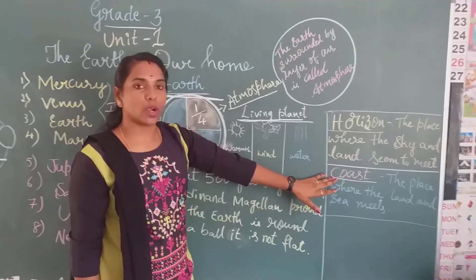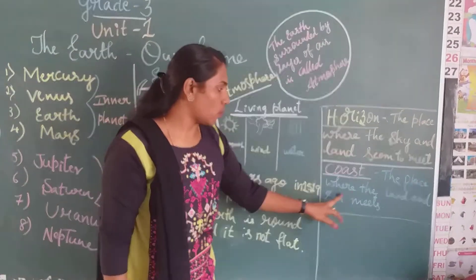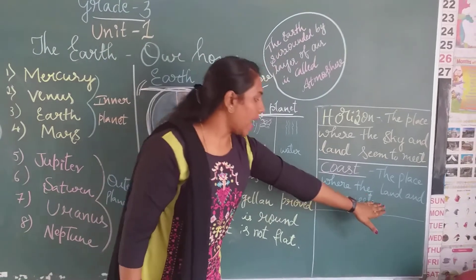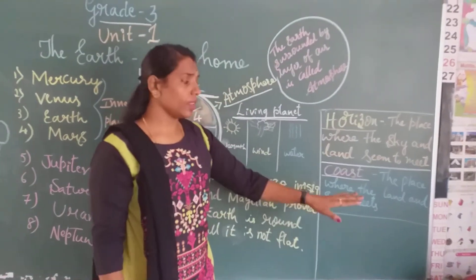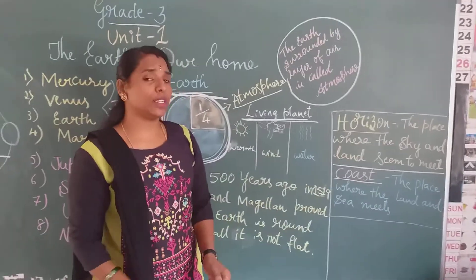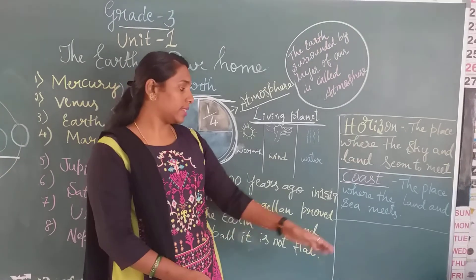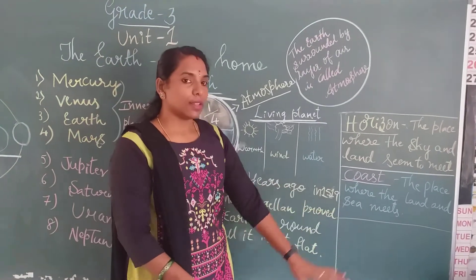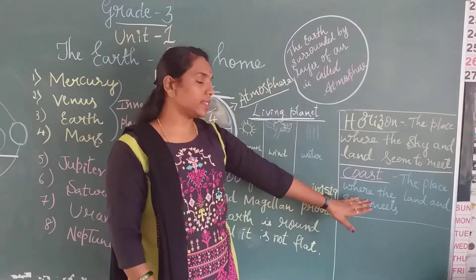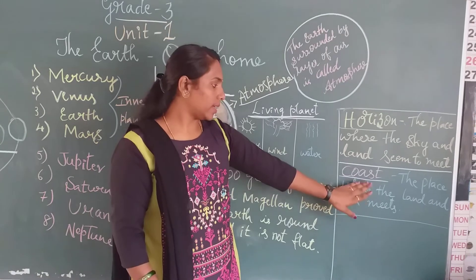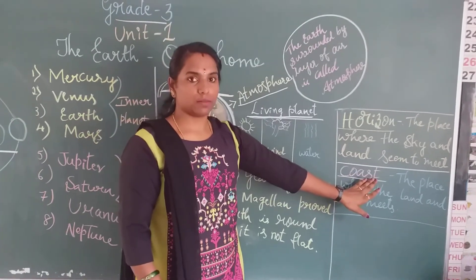Next we move on to the coast. Coast is the place where the land and the sea meet. When you stand near a coastal area, the surface of the land and the sea meet. That is called coast.